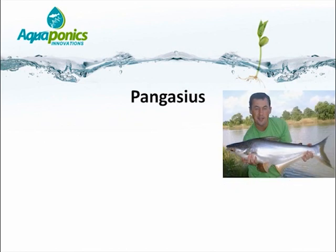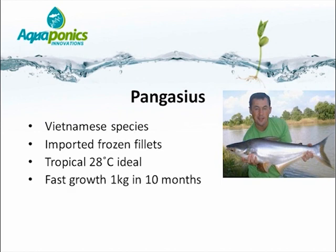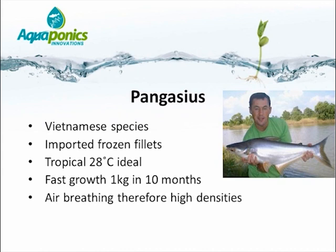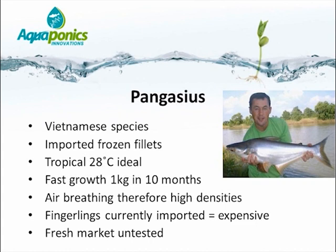Pangasius is a Vietnamese catfish species with very good market demand due to the high quality of their fillets. Frozen fillets are currently imported from Vietnam into Southern Africa. It is a tropical species with an optimal temperature of about 28 degrees Celsius. They grow rapidly, attaining about 1 kg in 10 months. Being air-breathing, they can be stocked at very high densities. However, spawning Pangasius is tricky, and fingerlings are still imported, making them expensive at about 5 rand per fish. The fresh Pangasius market has been largely untested, though a recent batch was very well received at a higher price as a fresh product.